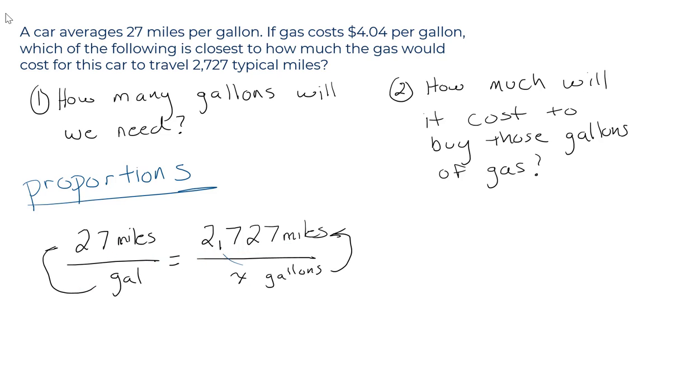Okay, well, how do we solve for x? One way is to cross multiply. Remember that? Cross multiply. So on the left-hand side, 27 times x, 27x equals on the right-hand side, 2,727.